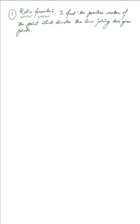In this video we are continuing with the problems related to vectors, and here we have to obtain the position vector of the point which divides the line joining two given points. So let's have the diagram first. We have two points A and B which are separated by a line joining them, and we have a point C whose position vector we wish to determine, with respect to a given origin point O.